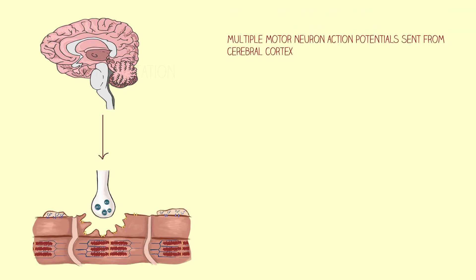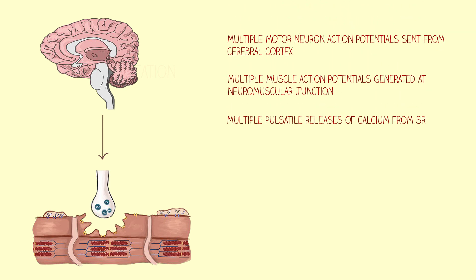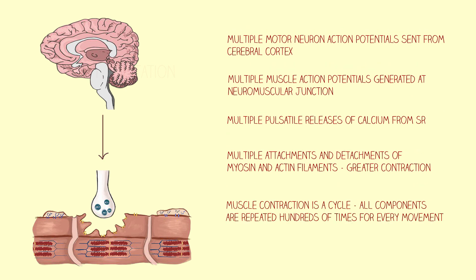Multiple contraction cycles are produced when multiple motor neuron action potentials are sent to the muscle fiber, creating multiple muscle action potentials, thus multiple pulsatile releases of calcium from sarcoplasmic reticula, and ultimately multiple attachments and detachments of myosin and actin. Essentially, you can think of it as going through all the steps we went through for excitation and contraction several times. This is called unfused tetanus, and this is actually how the majority of our muscle contractions occur each day.